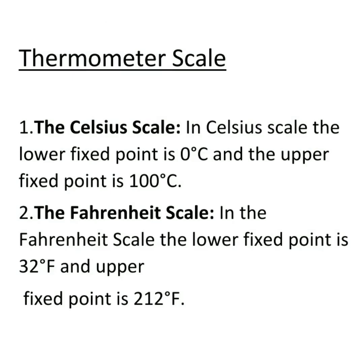Next we will see thermometer scales. There are two common scales to measure temperature. One is the Celsius scale, indicated by degree C, and the other is the Fahrenheit scale, indicated by degree F. In the Celsius scale, the lower fixed point is 0 degree Celsius, which corresponds to the melting point of ice, and the upper fixed point is 100 degree Celsius, which corresponds to the boiling point of water. The interval between these points is divided into 100 equal parts.